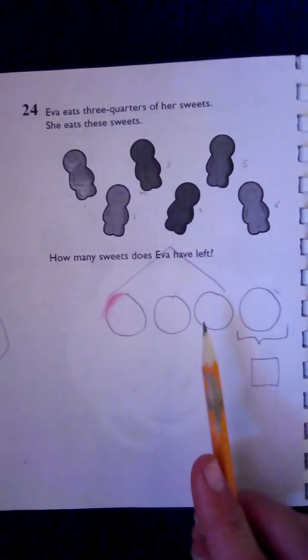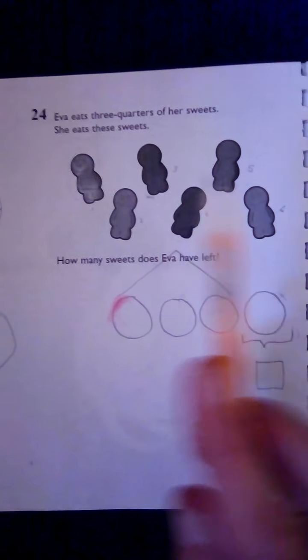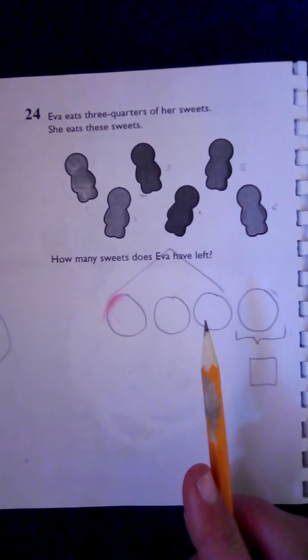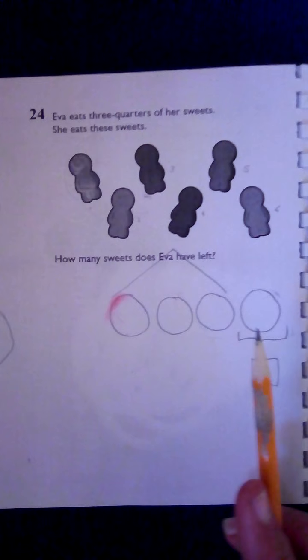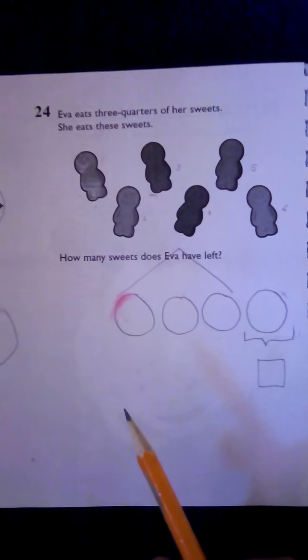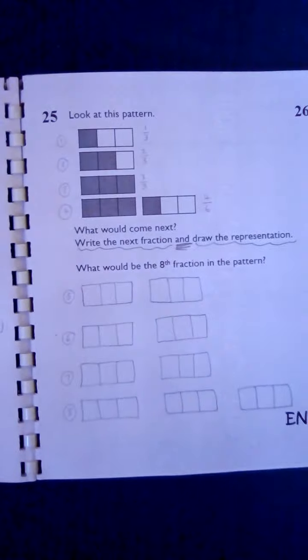So you need to share these sweets into these three quarters and then see how much are in each one, and then we'll know how much she has left because this one would have the same amount in it. You can pause to finish that one and then we move on to 25.